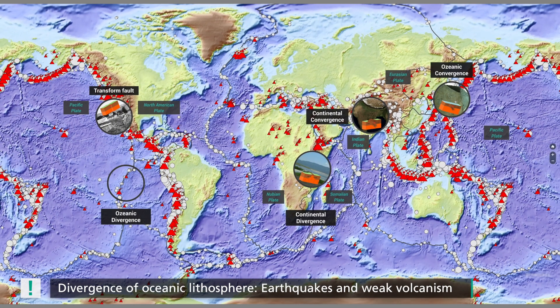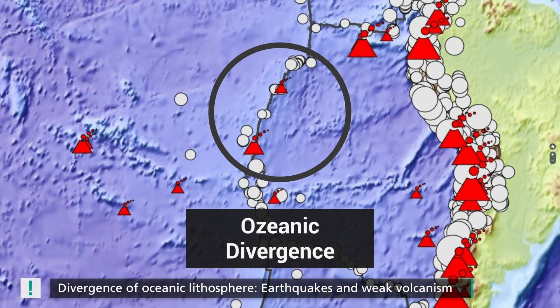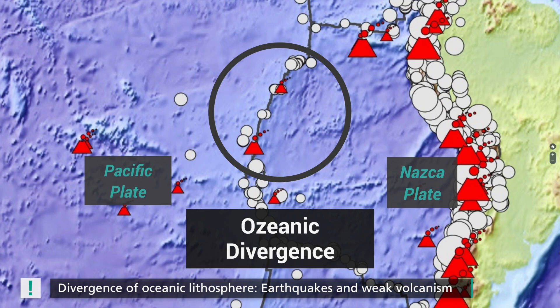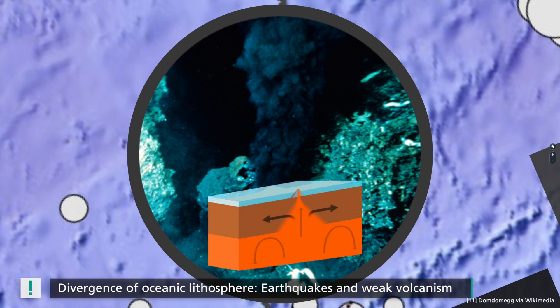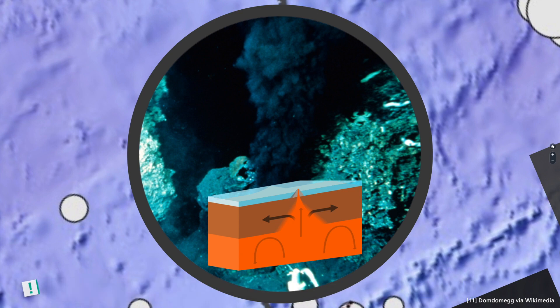Divergence can also occur in the oceans at what are called mid-ocean ridges. For example, in the Pacific, at the boundary between the Pacific plate and the Nazca plate. Here, material from the earth's interior is brought to the surface and new seafloor is formed, which is then pushed away to both sides. Indicators of such zones are black smokers, hydrothermal vents from which hot water flows — they are a weak form of volcanism.